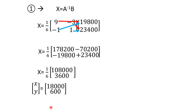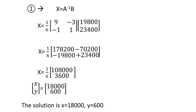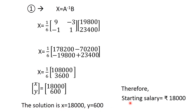Equating the terms, X = 18,000 and Y = 600. Therefore, the starting salary is Rs. 18,000 and the annual increment is Rs. 600. This is what we needed to find for this problem — the solution for the application problem using the matrix inversion method. Hope you understand today's session. See you in the next video. Thank you.